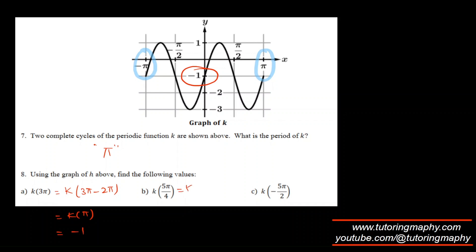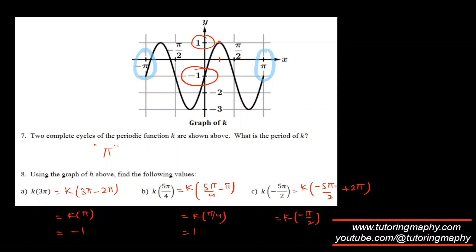For k of 5π over 4: subtract π to get k of π over 4, and k of π over 4 is 1. For k of negative 5π over 2: add 2π — negative 5π/2 plus 2π is negative π over 2 — and k of negative π over 2 is right here, which is negative 1.